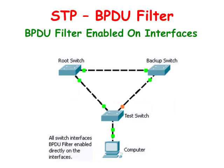When enabled on individual interfaces, spanning tree is effectively disabled on the interface port altogether. It will not send out BPDUs and will ignore any BPDUs it receives on that interface.